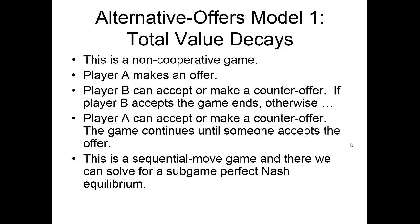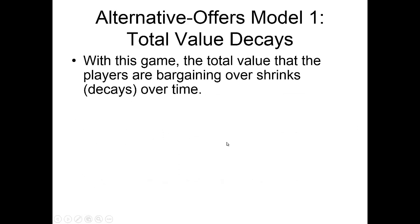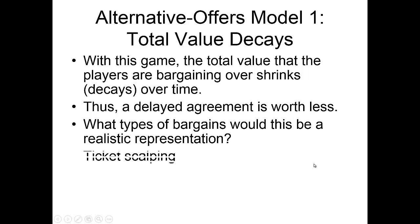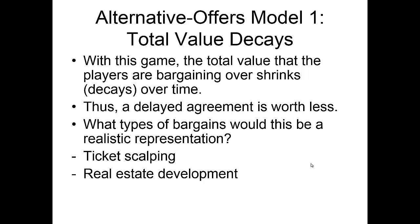This is a sequential move game — A makes an offer, B chooses to accept or make a counteroffer, A chooses to accept or make a counteroffer, and so on. We can solve for a subgame perfect Nash equilibrium, and the reason we can is that there will be a definite endpoint because the total value is decaying. With these models, we assume that the value is shrinking over time, so a delayed agreement is going to be worth less to the parties involved.